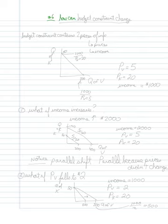Now we want to look specifically at the budget constraint and this very simple issue of how can the budget constraint change. Remember that the budget constraint contains two pieces of information: it contains information about prices and it contains information about income.